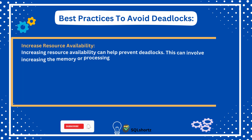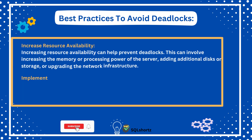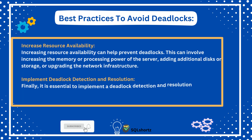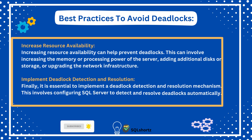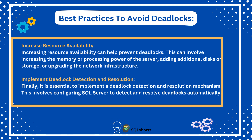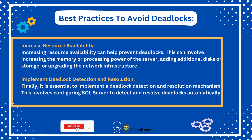Fifth, increase resource availability. Increasing resource availability can help prevent deadlocks. This can involve increasing the memory or processing power of the server, adding additional disks or storage, or upgrading the network infrastructure.